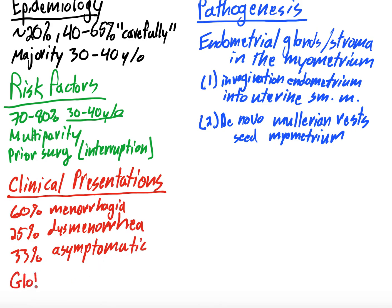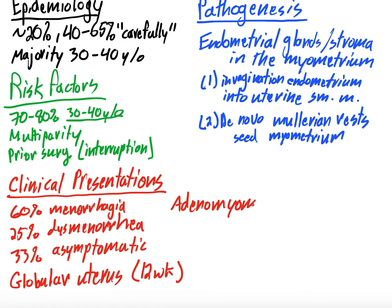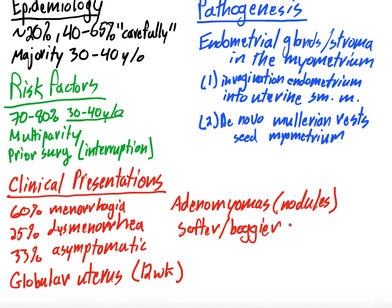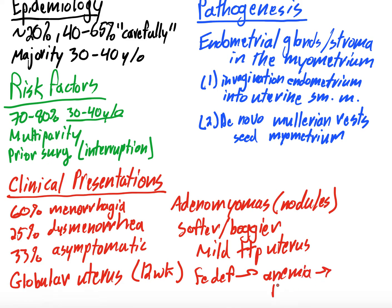On physical exam, you can find globular enlargement of the uterus, feeling like a 12-week pregnant uterus. Adenomyomas may be present as palpable nodules — not quite like fibroids, but adenomyotic nodules. The uterus may feel softer and boggier, since the myometrium contains soft, boggy endometrial tissue. There may be mild uterine tenderness on palpation, and patients can develop iron deficiency anemia with signs like orthostasis, fatigue, and weakness.